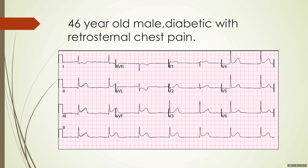This is a 46-year-old male who is diabetic with retrosternal chest pain. You can see ST elevations in leads 2, 3, and aVF with reciprocal changes in leads 1 and aVL, with a slight ST elevation in V1. This is an inferior wall MI with an RVMI, since you have ST elevation in lead 3 more than lead 2, and aVL depression more than aVR.